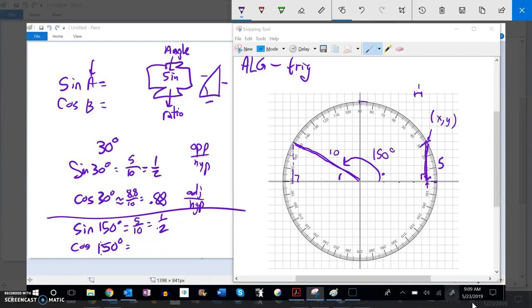So for cosine of 150 degrees, it's going back 1, 2, 3, 4, 5, 6, 7, 8. About 8.8. 8.8 over 10. But what I notice is this is going this direction. It's going backwards. So it's actually negative. So I could say that's about negative 0.88.